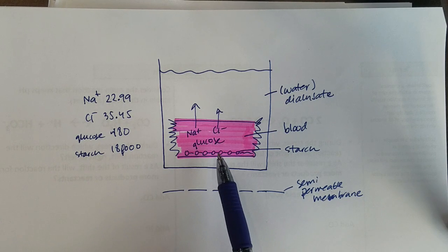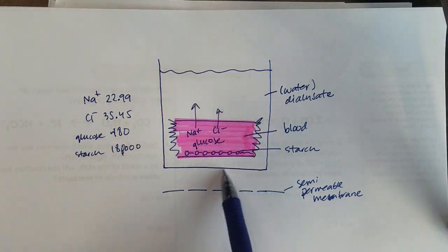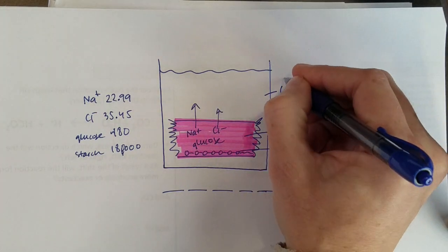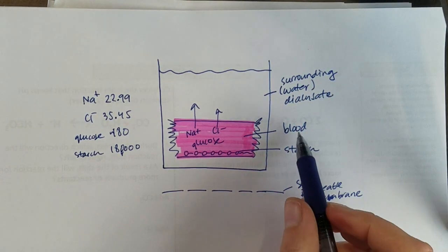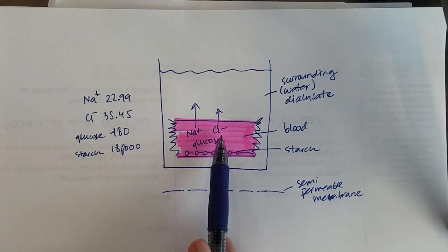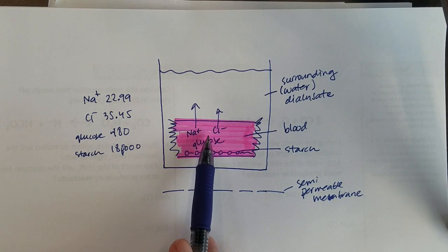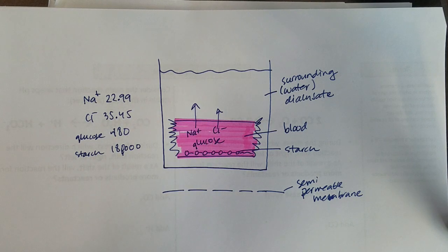We're going to make this blood solution, pour water over it, and throughout the lab today this will be called the surroundings. This will be called the blood, and we're going to see which of those three substances are able to diffuse from high concentration to low concentration.